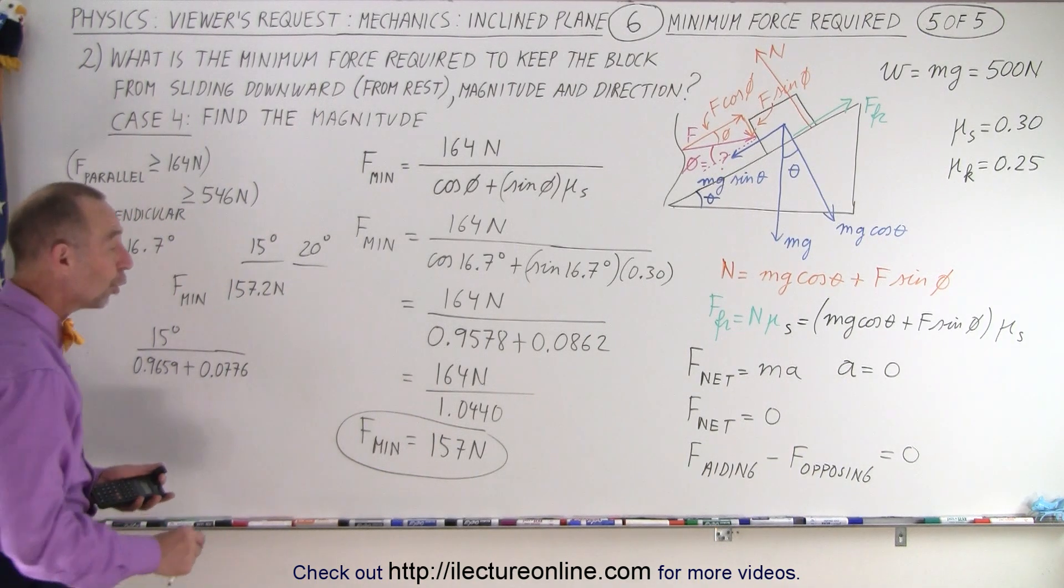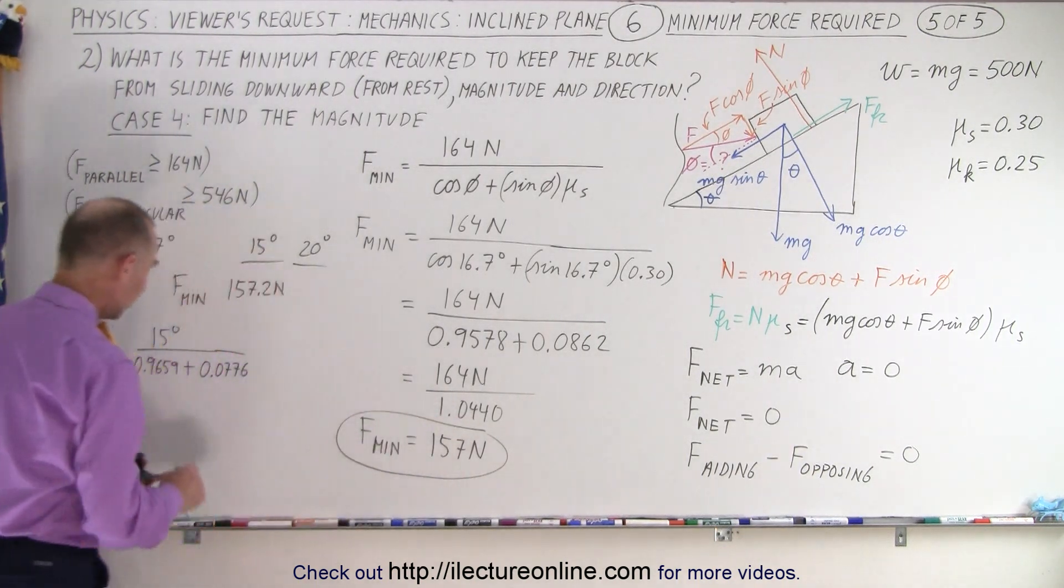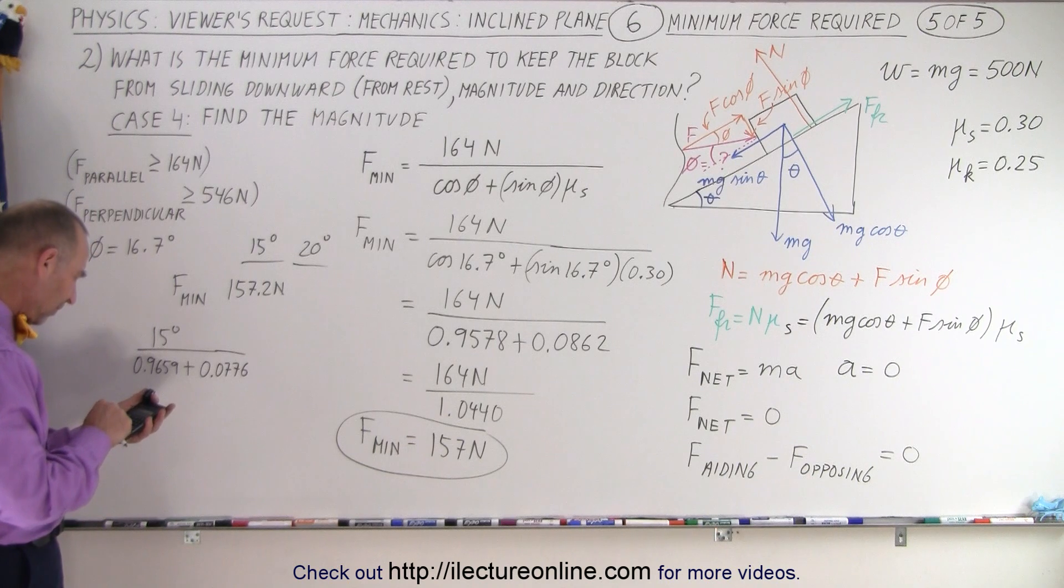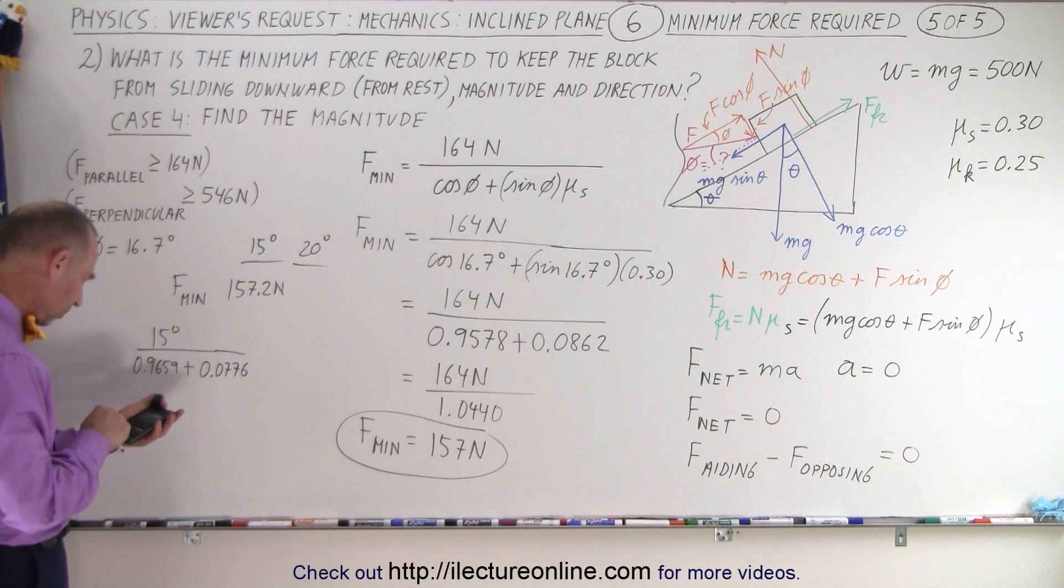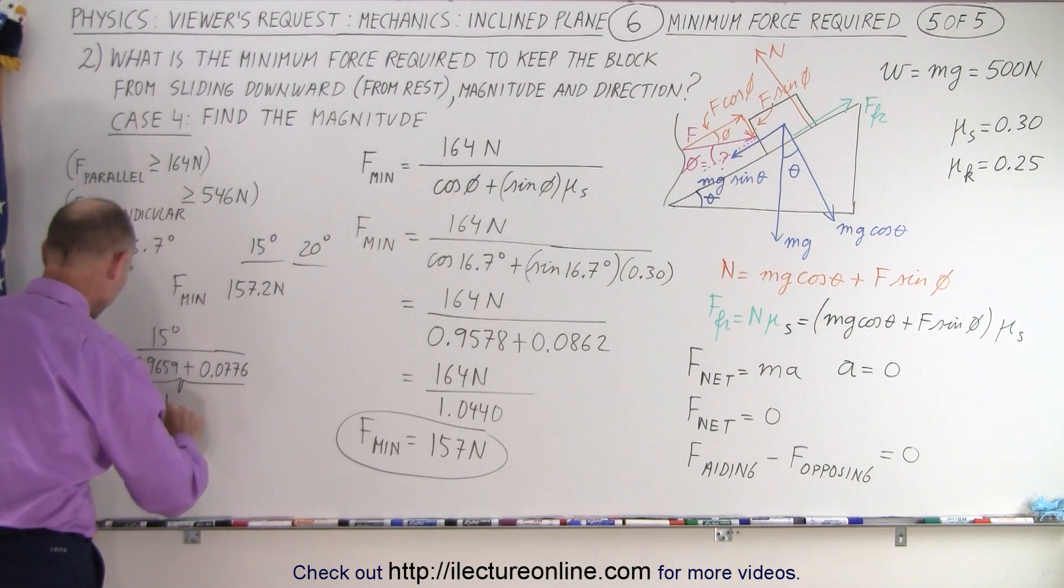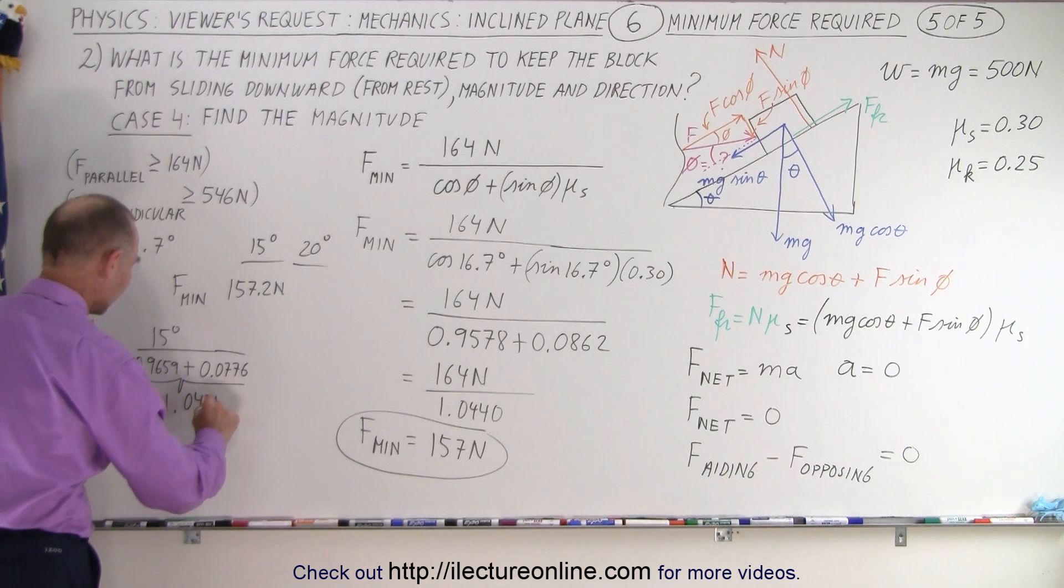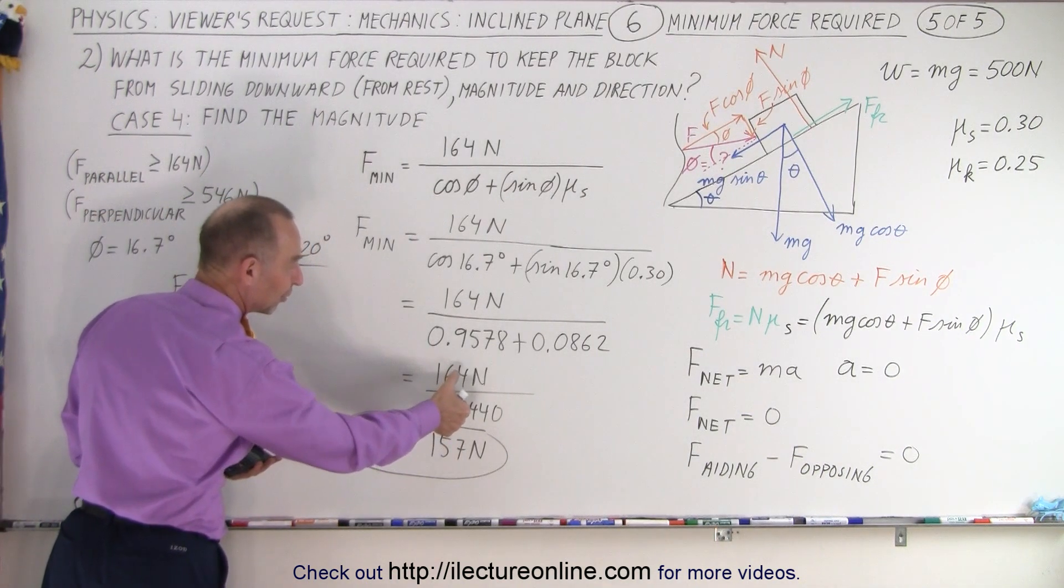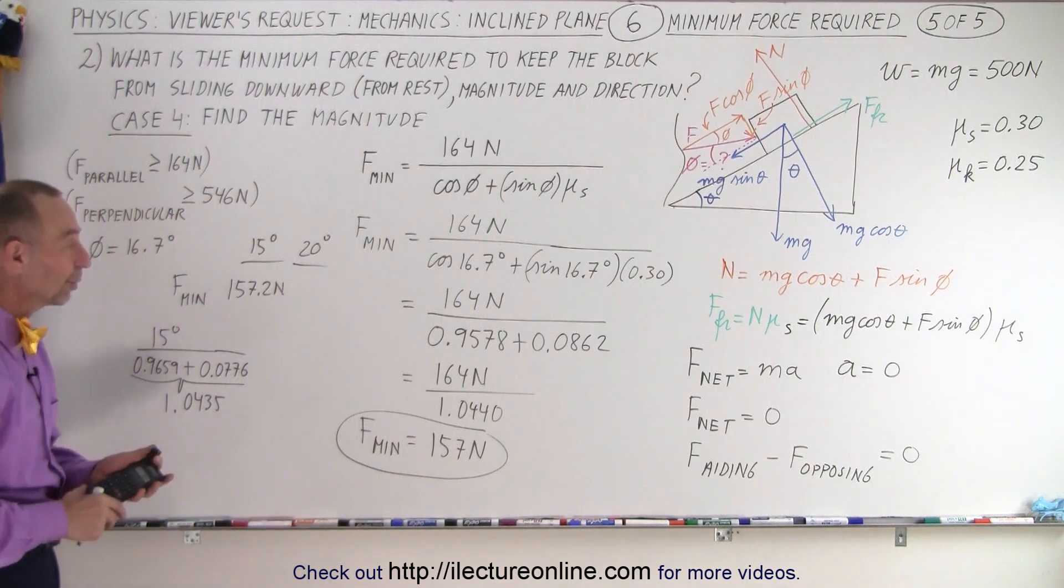Less than 1, then? No, it's less than 1.044. So when you combine those two together, so 0.9659, plus 0.0776, together, this gives you together 1.0435. So you're now dividing by a smaller number, and therefore the fraction will be bigger.